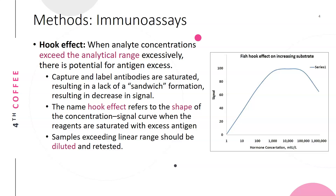With the hook effect, very high analyte levels can read low or even undetectable because the reaction cannot proceed. If you suspect a sample should be elevated, you should dilute it and rerun it. The name 'hook effect' comes from the shape of the concentration-signal curve — as you can see here, the signal goes up linearly, loses linearity, and then drops off, forming a fish-hook shape. Any samples that exceed the linear range should always be diluted and retested.